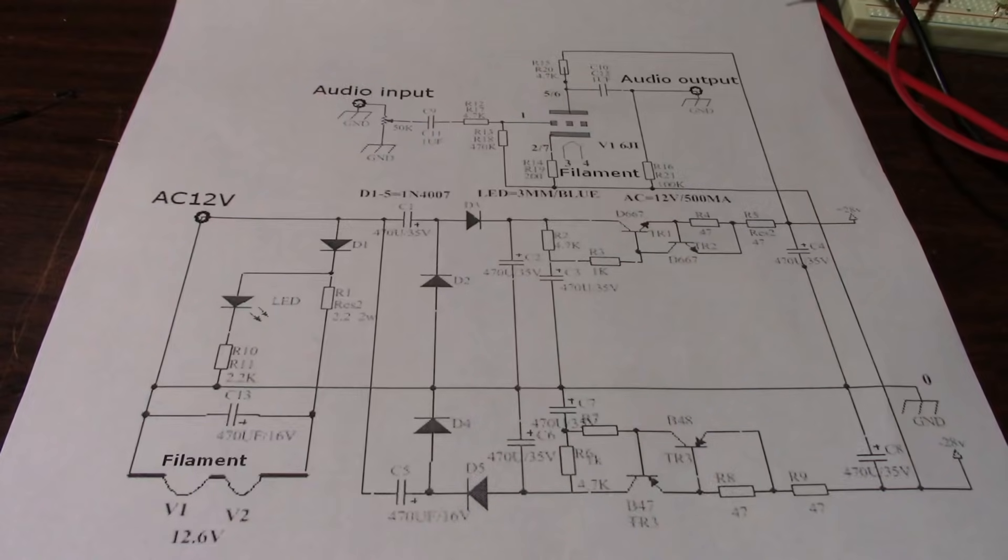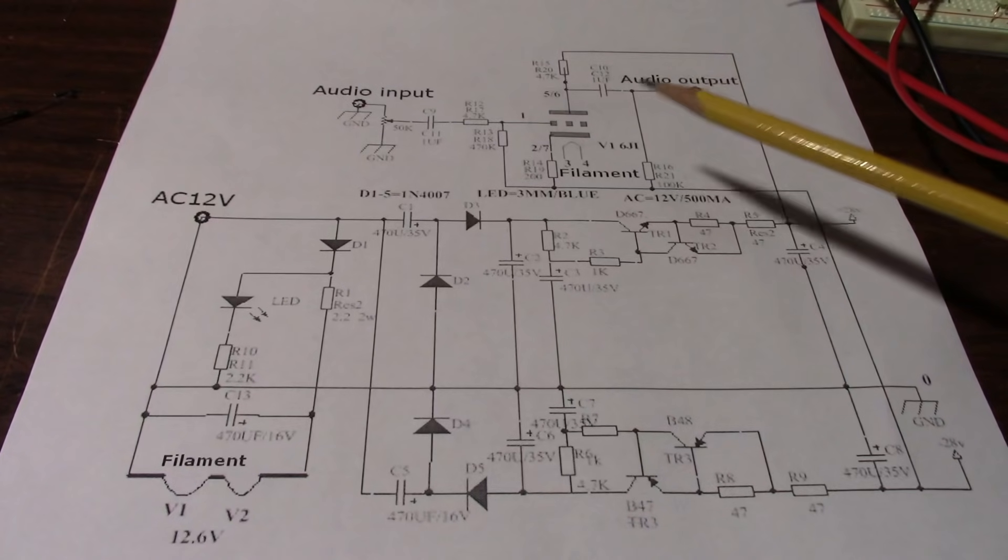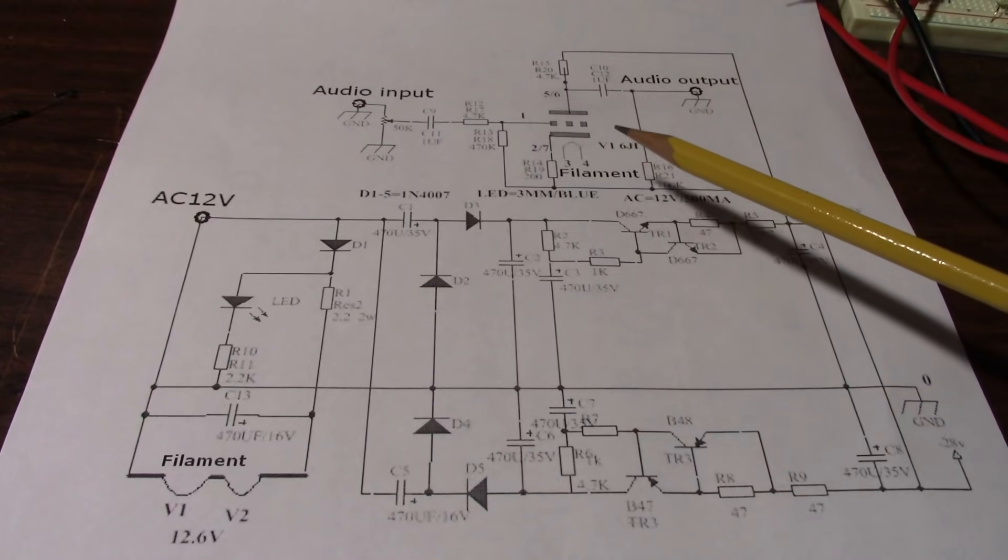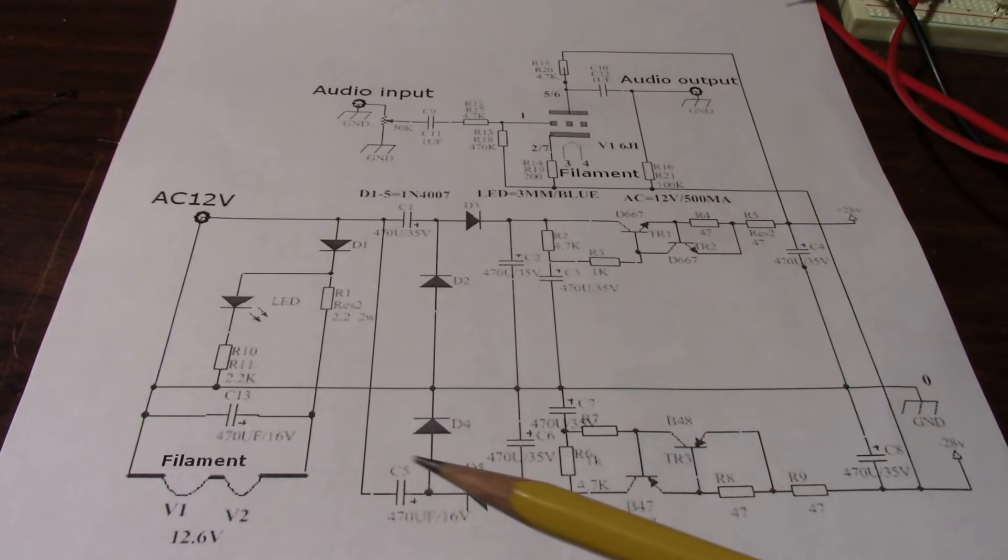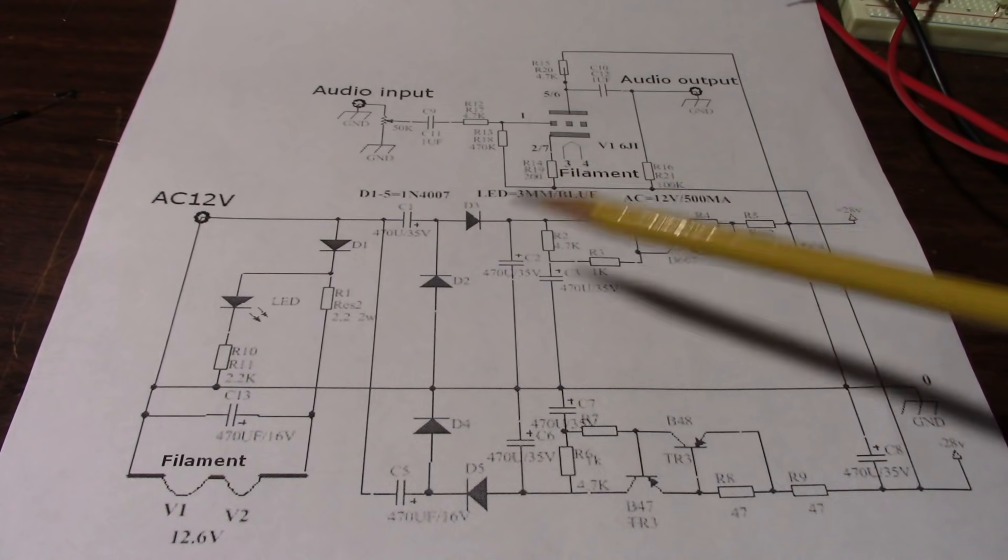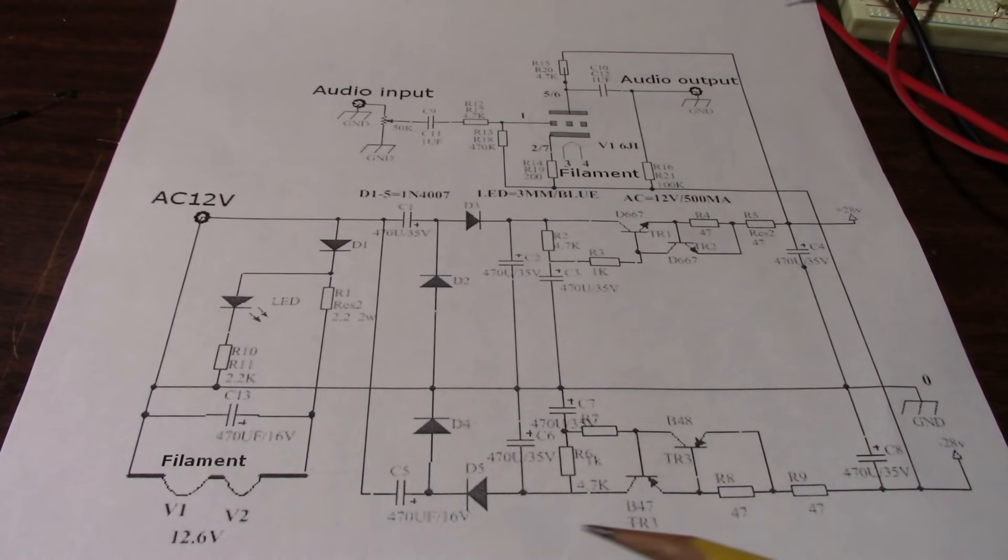I went on eBay and looked for this amplifier. When you go to eBay, just search up a tube preamp. What is it? A 6J1 or something like that? Yeah, a 6J1. And you should be able to find one of these amplifiers pretty quickly. One of the auctions or listings had a schematic with it, so I screen grabbed that and printed it out. These are pretty cheap. They're usually around $10, $10, $12 or so. They're not very expensive at all.